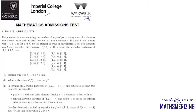This question is related to partitioning of a set. It is about the number of ways of partitioning a set of n elements into subsets each with at least two and at most n elements. If n and k are integers such that k lies between 1 and n both inclusive, let f(n,k) be the number of ways of partitioning a set of n elements into k such subsets.